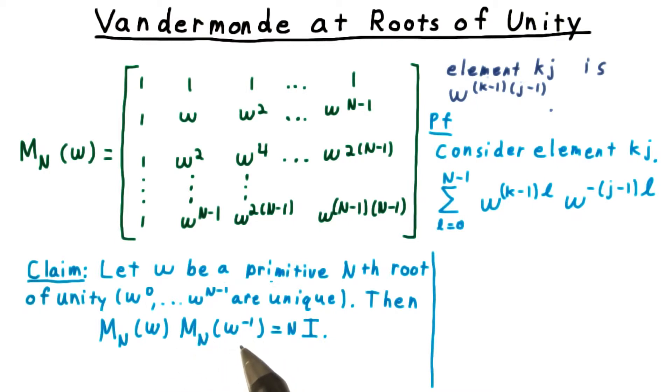So we're taking corresponding powers of omega to the k minus one and omega to the negative j minus one, multiplying those together, and then adding all of those up.